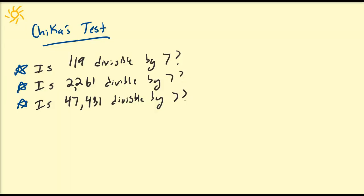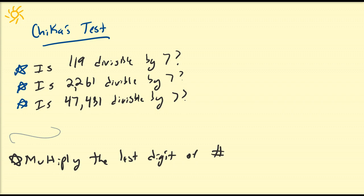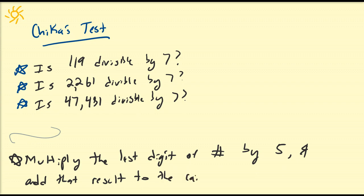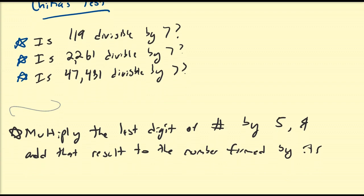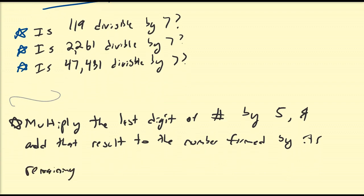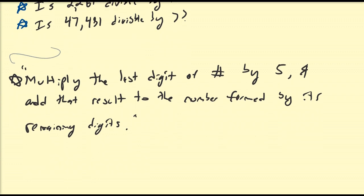Chica's test for divisibility by 7 goes as follows. The rule says: multiply the last digit of the number of interest by 5, and add that result to the number formed by its remaining digits. Let's work through a couple of examples to illustrate this.